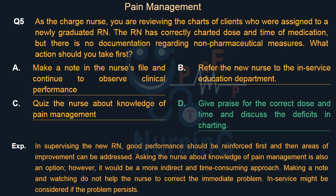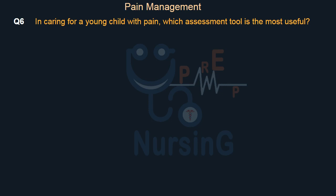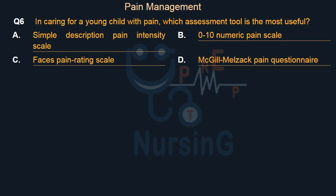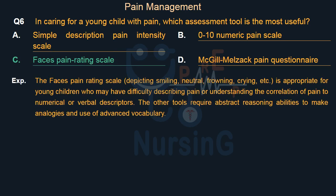In caring for a young child with pain, which assessment tool is the most useful? Option A: Simple Description Pain Intensity Scale. Option B: 0 to 10 Numeric Pain Scale. Option C: Faces Pain Rating Scale. Option D: McGill-Melzack Pain Questionnaire. Right answer is Option C: Faces Pain Rating Scale. The faces pain rating scale, depicting smiling, neutral, frowning, crying, etc., is appropriate for young children who may have difficulty describing pain or understanding the correlation of pain to numerical or verbal descriptors. The other tools require abstract reasoning abilities and use of advanced vocabulary.